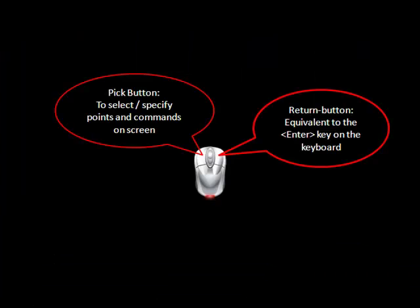You can use the mouse to select menu options by clicking them. You can also use the mouse to draw or select objects on the screen. On a two-button mouse, the left button is the pick button — it's used to specify points on the screen. The right button is the return button, the same as hitting the Enter key on the keyboard. In some situations, it will have some special functions.